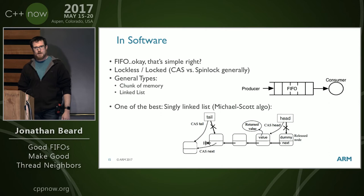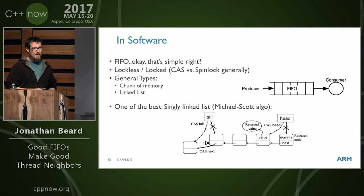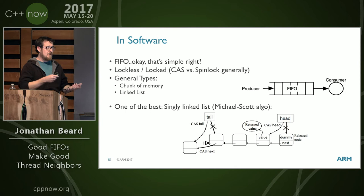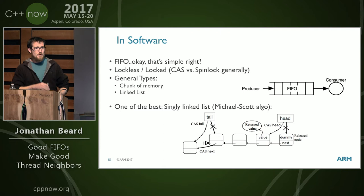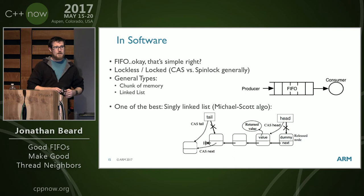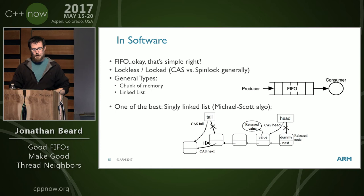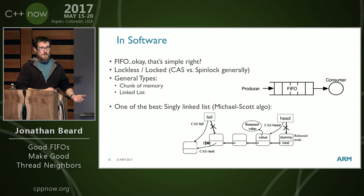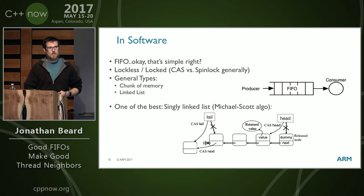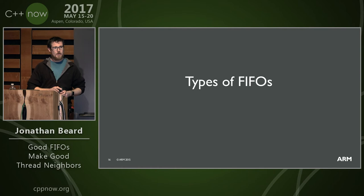FIFO — simple in concept. Two general types: lockless and lock-free. Compare-and-swap I still consider in the spin-lock category since we're usually spinning on the CAS, but most people consider those lock-free. For simplicity I'm dividing them into two major categories: ones that are a big chunk of memory, and ones that are a linked list. At the bottom I show a singly linked list — the Michael Scott implementation — which is the easiest to teach. A student can do it in a day and debug it in another day.